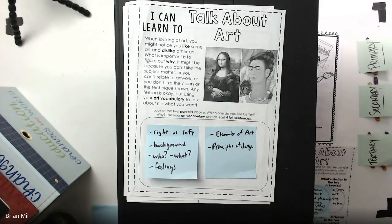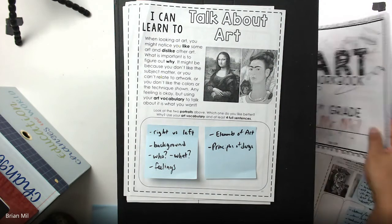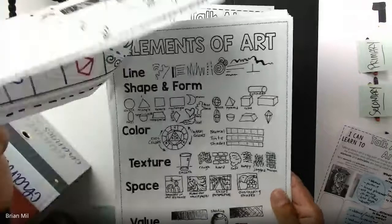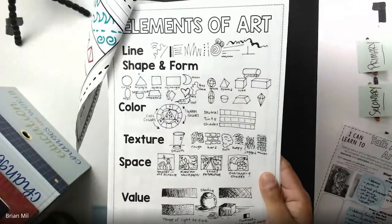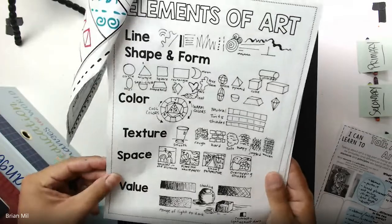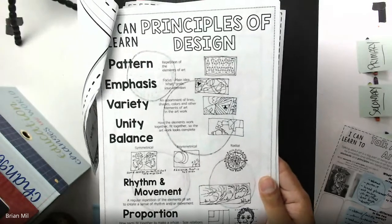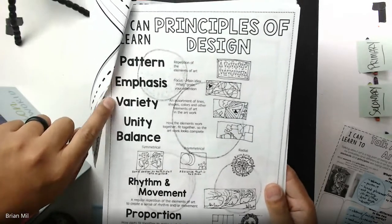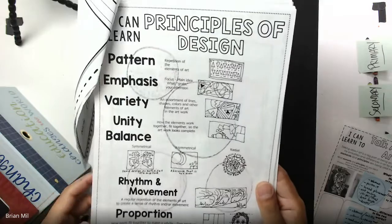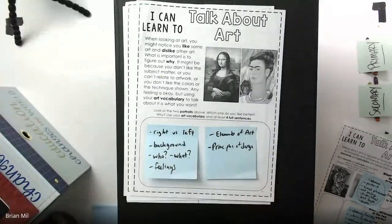You can also talk about the elements of art being used or the principles of design. That's pretty easy because if you look at your packet — the very first page — those are the elements of art: line, shape and form, space, value, and so on. And the next page after that are the principles of design: pattern, variety, balance, proportion, and so on. So you can use those vocabulary words. It's only asking you to do four sentences — and that's it.